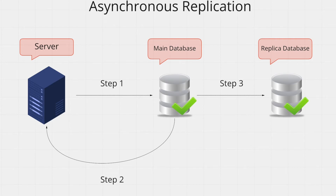Now let's look at the other approach: asynchronous replication. In this flow, your server writes to the main database. The main database then tells your server the write was successful. After that, the main database writes the data to the replica without needing any acknowledgment. The key difference is that this time the write to the main database is not blocking — as soon as the data has been written to the main database, your server can move on to serving another request. The replication to the replica is done in the background. This is great for write performance; no matter how many replicas you have, your write performance won't suffer. However, the problem is data inconsistency — unlike in synchronous replication, we are not making sure that all replicas have written the data successfully, so different replicas might have different amounts of data missing.